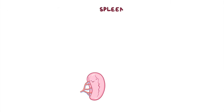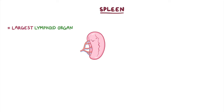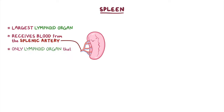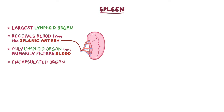The spleen is the largest lymphoid organ. It receives blood from the splenic artery and is the only lymphoid organ that primarily filters blood instead of lymph. It's an encapsulated organ that's typically about 12cm in length, 7cm wide, and 3cm deep.